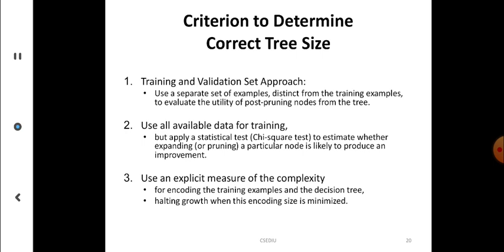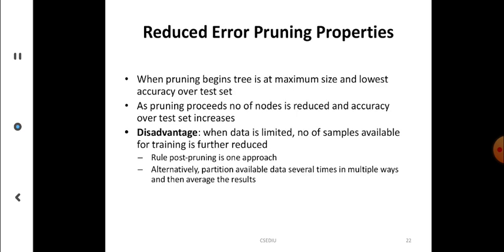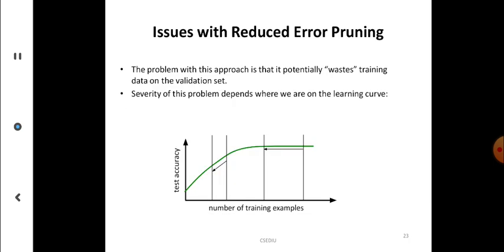There are three criteria to determine the correct tree size: first, use a training and validation set approach with a separate set of examples; second, use all available data for training; third, use an explicit measure of complexity. A validation set provides a safety check against overfitting and is typically half the size of the training set. Reducing error pruning: pruning begins with the tree at maximum size, and as pruning proceeds, the number of nodes is reduced and accuracy over the test set increases. A disadvantage is that when data is limited, the number of samples available for training is further reduced.